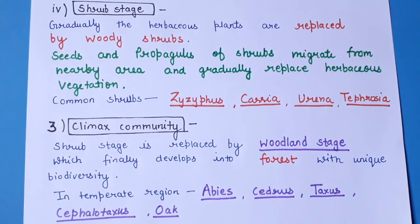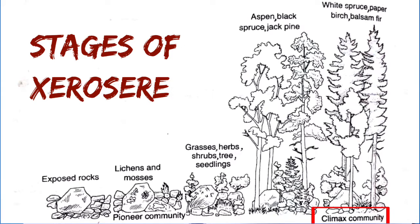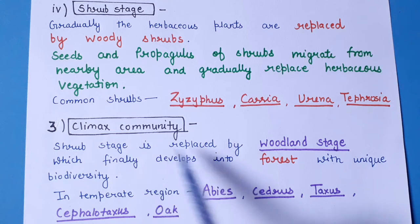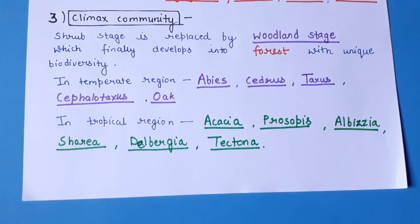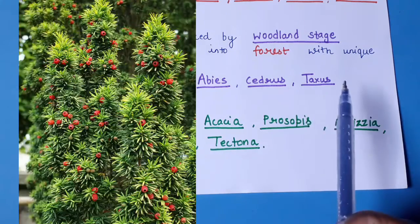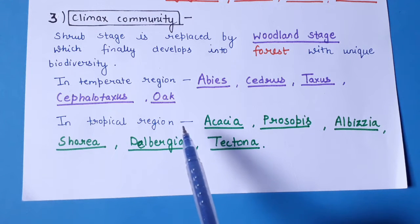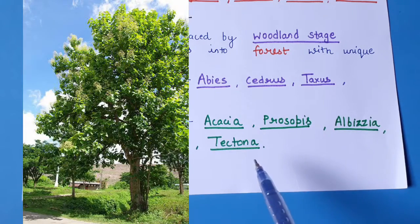The final stage is the climax community, which is the final and stable community of the succession process. The shrubs are replaced by a woodland stage that finally develops into a forest with unique biodiversity. The forest type varies by region: in temperate regions, trees like Abies, Cedrus, Taxus, Cephalotaxus, and Oak are found, while in tropical regions the climax community includes trees like Acacia, Prosopis, Albizia, Shorea, Dalbergia, and Tectona.